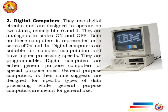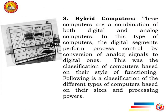General-purpose computers are meant for general use, while special-purpose computers are designed for specific types of data processing. Hybrid computers are a combination of both digital and analog computers. In this type of computer, the digital segments perform process control by conversion of analog signals to digital ones. This was the classification of computers based on their style of functioning.